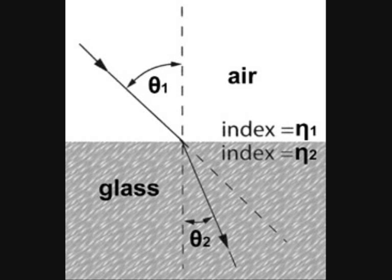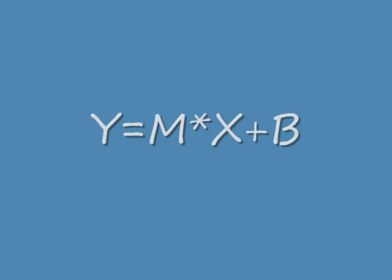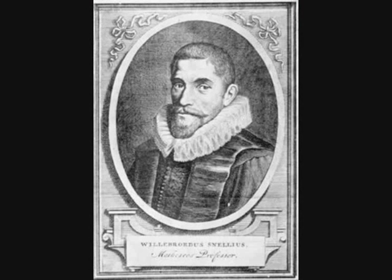The relationship between the two can be written as y equals m times x plus b. x is the sin of r and y is the sin of i. And m is the refractive index of the acrylic block. This is described in Snell's Law.